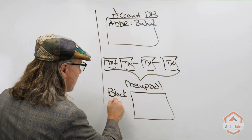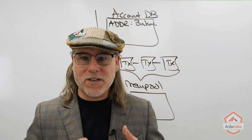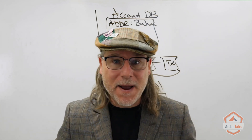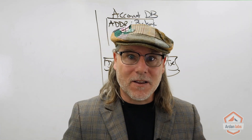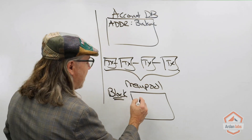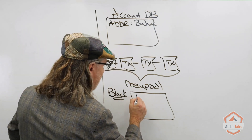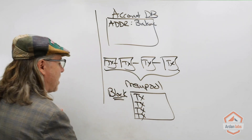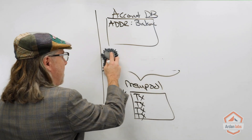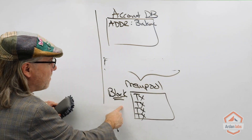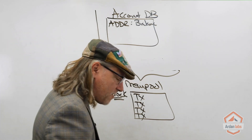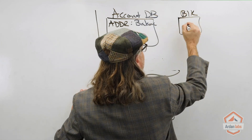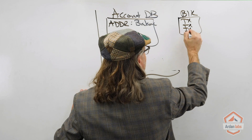The consensus algorithm is going to take those transactions and create a block. Think of a block as a batch of transactions — similar to a nightly batch reconciliation in credit card systems. We take the transactions in whatever order we choose, pull them out of the mempool, and put them into a block.